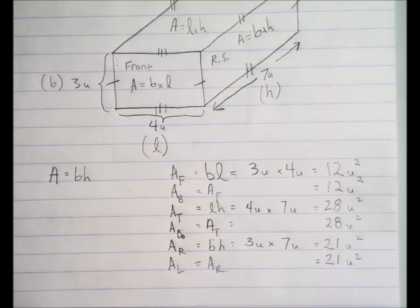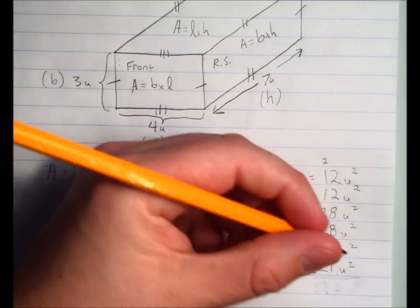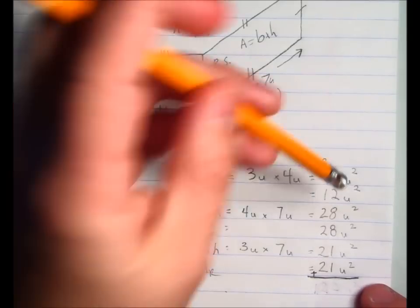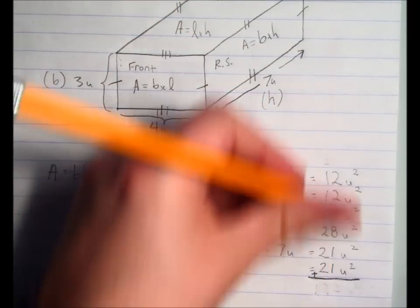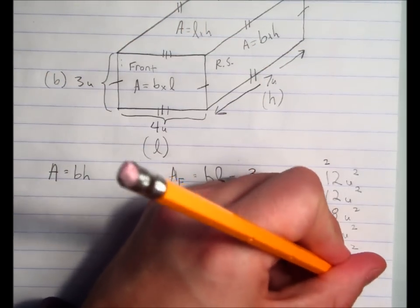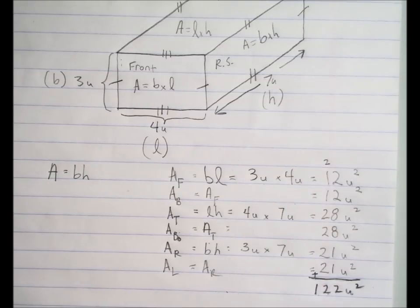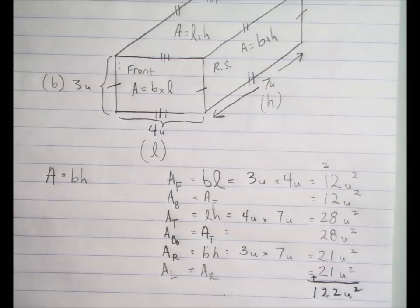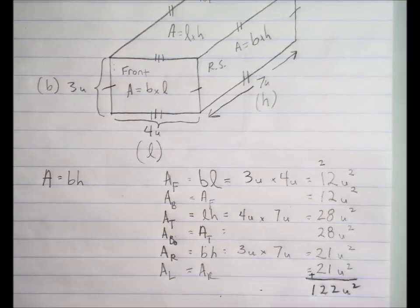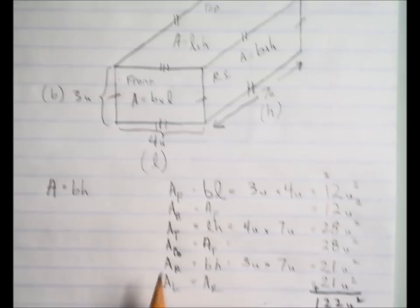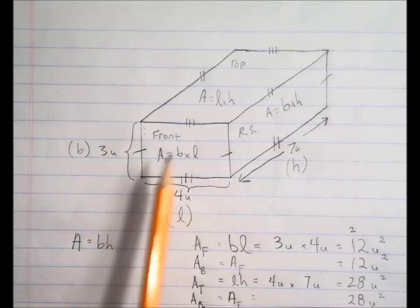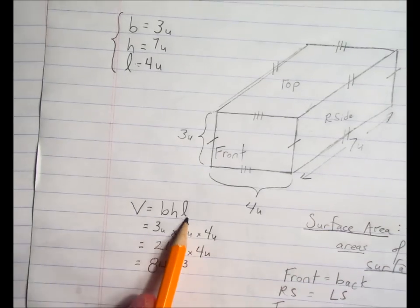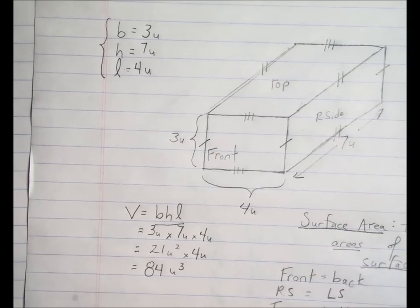Some people might say they're done after calculating each face, but no — surface area is the combined area of all the surfaces, so we need to add them all up. Adding our values: 12 + 12 + 28 + 28 + 21 + 21 gives us one hundred and twenty-two square units. So essentially, when calculating surface area, find the area of each surface and add them. For volume, multiply all three dimensions together to get the answer in units cubed.